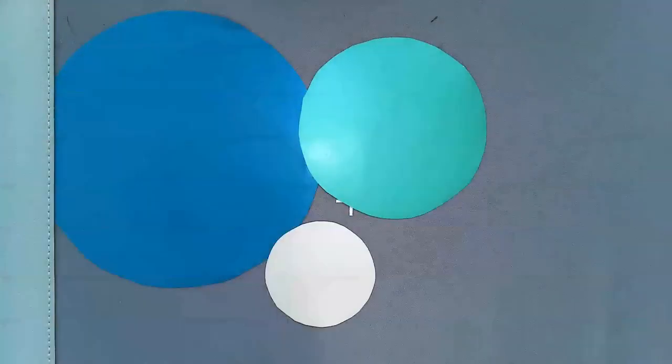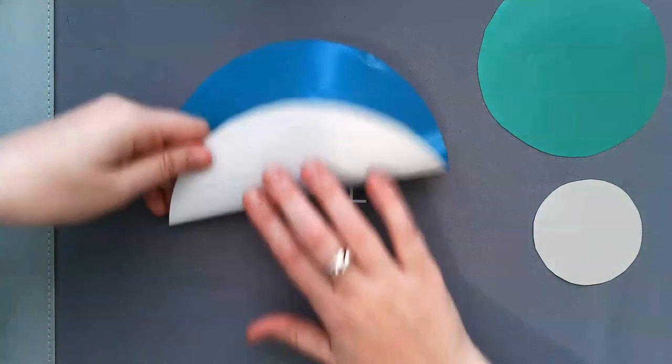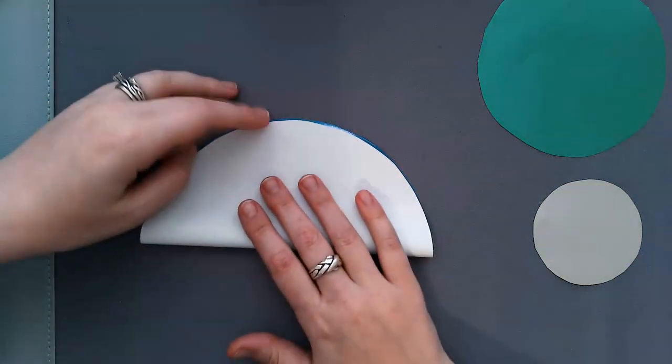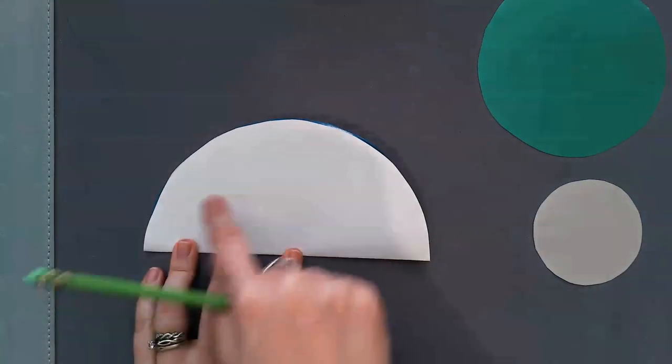Then the first thing I need to do is trace each of my circles and get them cut out. Then to make one snowflake, I'm going to take one of my circles and fold it in half. Then I'm going to pretend this is like half of a pie and I want to cut it into thirds.